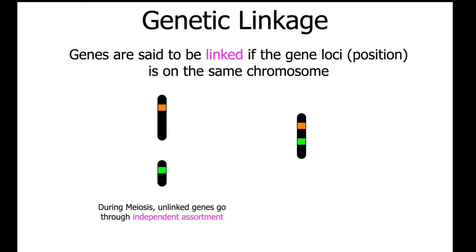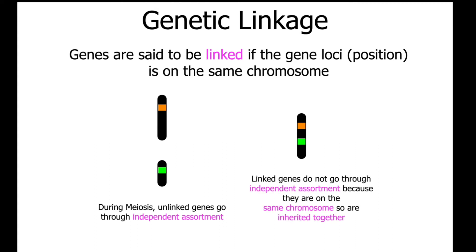If the genes are unlinked, since they're on different chromosomes, they undergo independent assortment during meiosis, and this impacts the kinds of gametes you can get. However, if you have linked genes on the same chromosome, they do not go through independent assortment because they are inherited together.